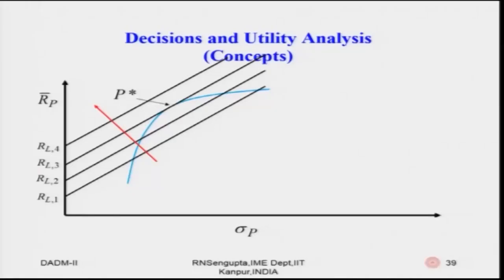For risk to return you take the minimum value; for return to risk you take the maximum, so that the weights are the best combinations. The R_F or R_L value — the risk-free interest rate — you keep changing it. As you keep changing it you will have different contours, and from those you can find the best portfolio value P* or the best alternative.